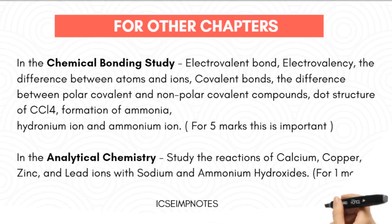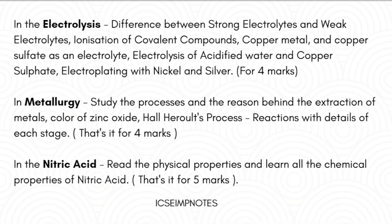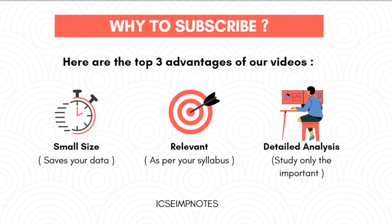For the other chapters — chemical bonding, analytical chemistry, electrolysis, metallurgy, and nitric acid — you should study the following points only. Chemical bonding has only five marks weightage, analytical chemistry has one mark, electrolysis four marks, metallurgy four marks, and nitric acid five marks.